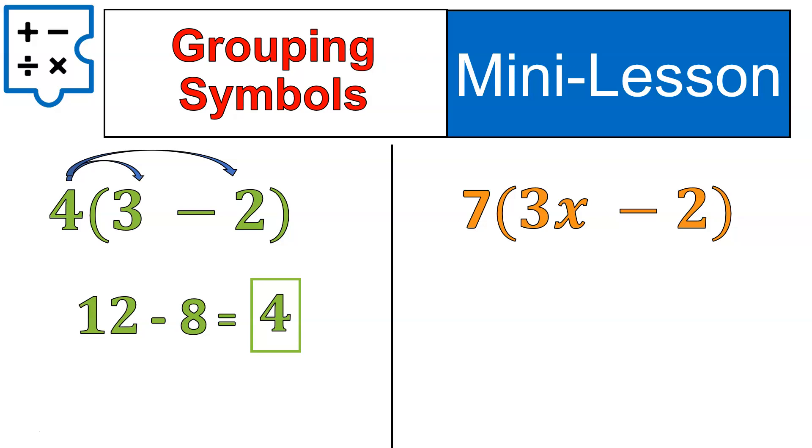Now, you could have said, could I simply say 3 minus 2, simplify what's inside the parentheses, 3 minus 2 is 1, and then 4 times 1 is equal to 4. And absolutely you could with this first example.